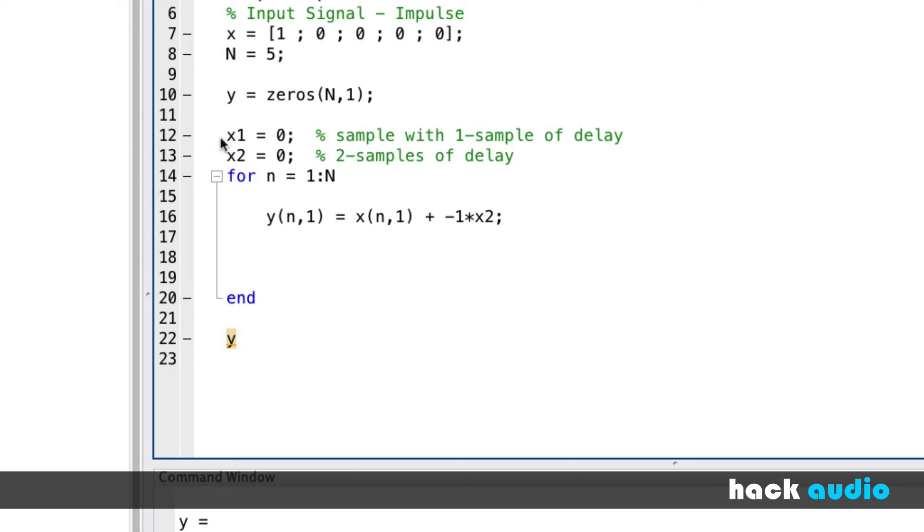Now what we have to do is update these values, X1 and X2, inside of our loop, so that when we go through each sample, we are going to move on the dry samples, or without any samples of delay, to our other variables. So here we can have X1 is going to be equal to X(n,1). So we're going to put this sample into X1 so that by the next time we'd want to use it, we'd have one sample of delay in it. We also need to have X2, and X2 is going to be assigned the value of X1.